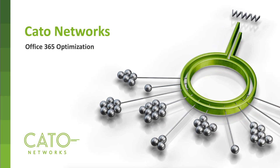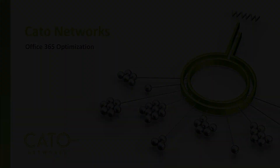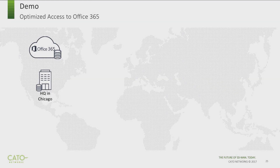Welcome to our demo showing how Cato optimizes access to Office 365. One of the key challenges with moving to Office 365 in the cloud is that your data is now stored far away from the users. That distance could have a big impact on application performance and the user experience.